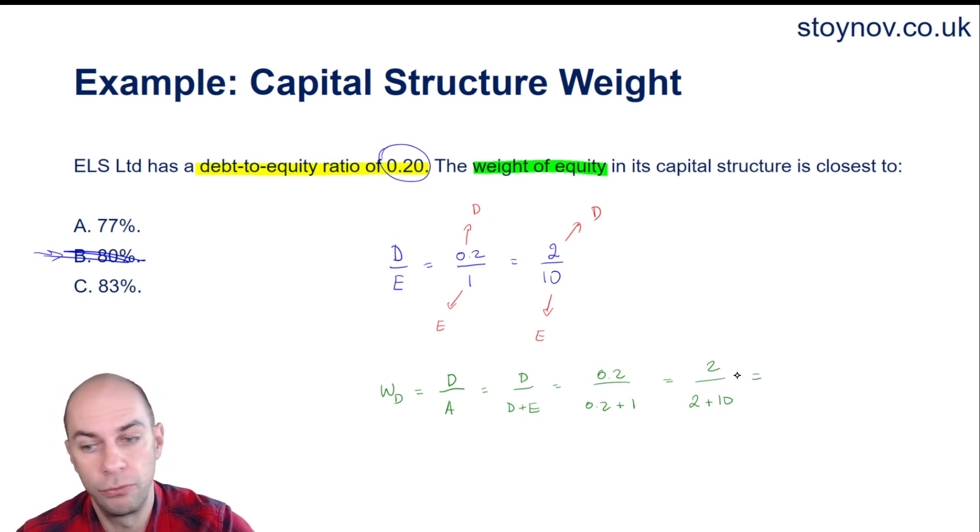I'm going to probably get 17%. Now, what does that mean? That means that the debt represents 17% of my capital structure. So once I've got that, I can then go ahead and do the weight of equity as 1 minus 17%, which of course is 83%, at which point I can circle C and move on with the rest of the paper.